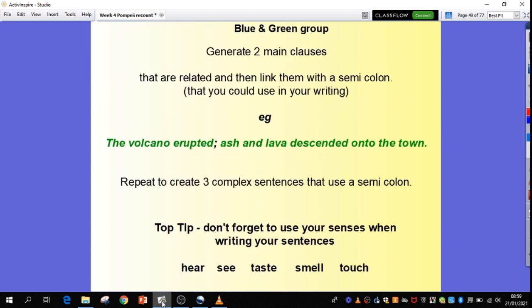Hello, Blue and Green Group. Okay, your task today is that I want you to generate two main clauses that are related, and then link them together with a semicolon that you could use in your writing in your third paragraph. So, you might want to look back at your plan and remember what your third paragraph is all about so that your sentences relate. You can use them in there. So, for example, here I've given you one.